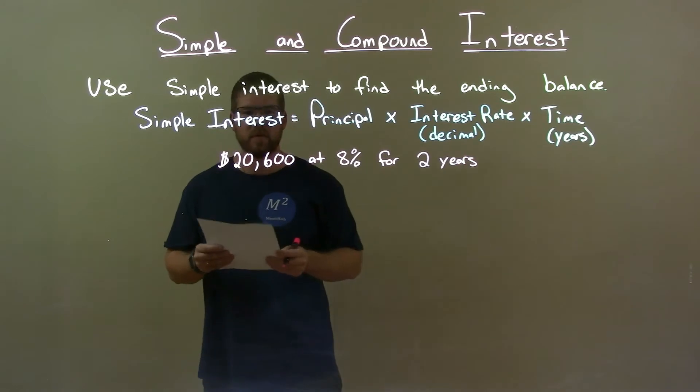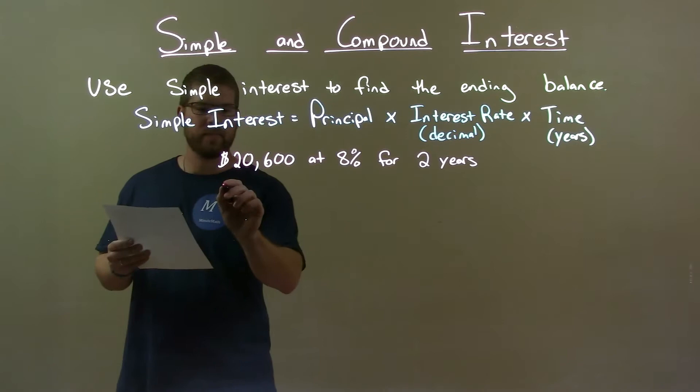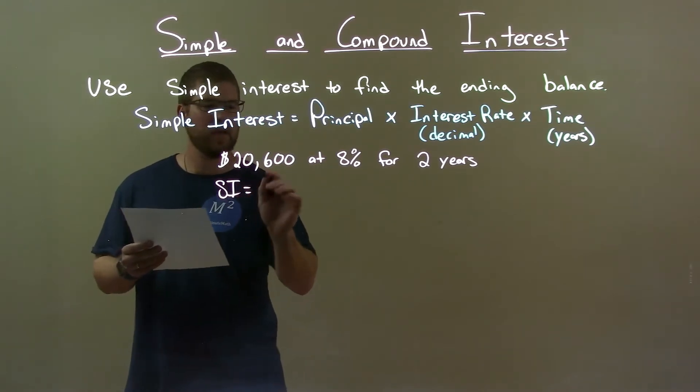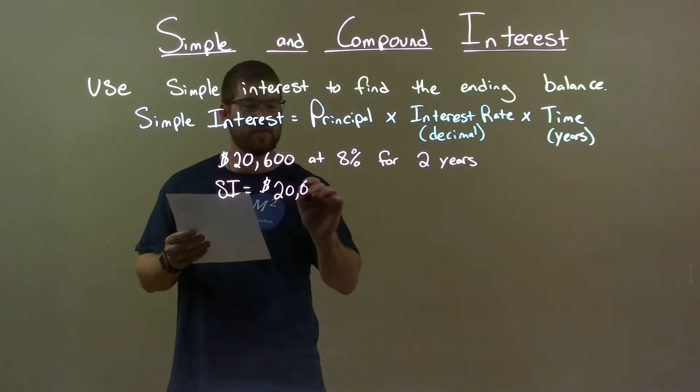$20,600 at 8% for 2 years. I need to use my simple interest formula. Simple interest equals my principal, $20,600, that's a 6, there we go.